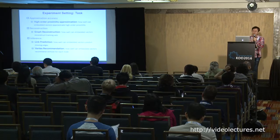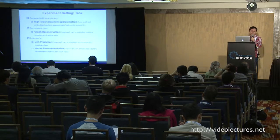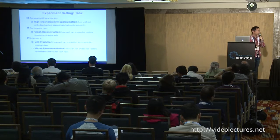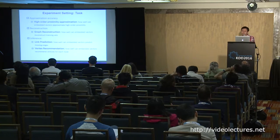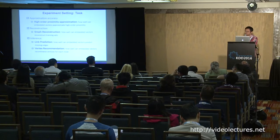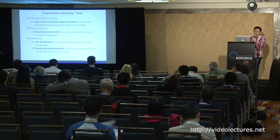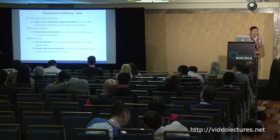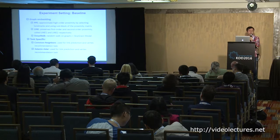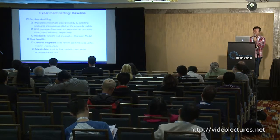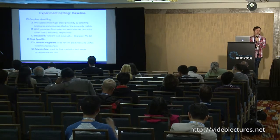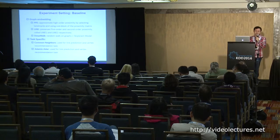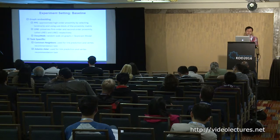Our second task is graph reconstruction, which measures how well embedded vectors capture the information in the training set. Our third task is inference, which has two parts: link prediction — using embedded vectors to predict missing edges — and vertex recommendation, which measures how well embedded vectors recommend vertices for each node. We compare our algorithm with state-of-the-art baselines including graph embedding methods such as PPE, LINE, and DeepWalk, as well as two task-specific algorithms: Common Neighborhood and Adamic-Adar.